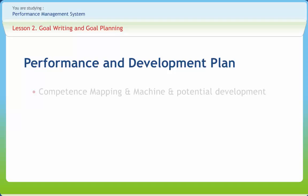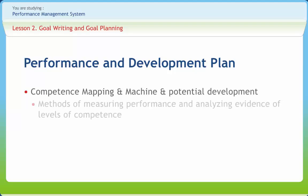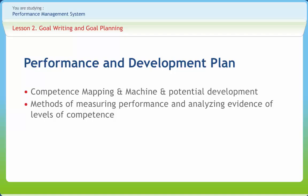This requires competence mapping and potential development. Competency is the underlying characteristics required to perform a given task, activity, or a role. The performance aspect of the plan obtains agreement on what has to be done to achieve objectives, raise standards, and improve performance. Methods of measuring performance and analyzing evidence of levels of competence are considered. For individuals, this stage includes the preparation and agreement of a personal development plan.